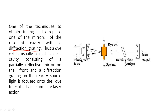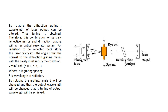A diffraction grating is an arrangement consisting of equidistant opaque and transparent lines used to diffract light. The dye cell is usually placed inside a cavity consisting of a partially reflective mirror on the front and a diffraction grating on the rear. A source light is focused onto the dye to excite it and stimulate laser action. By rotating the diffraction grating, the wavelength of the laser output can be altered, and thus tuning is obtained. This combination of partially reflective mirror and diffraction grating acts as the optical resonator system.